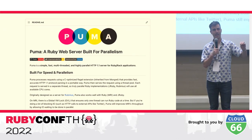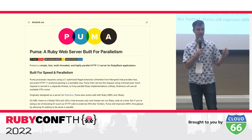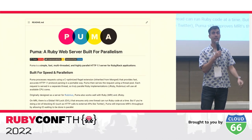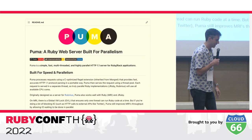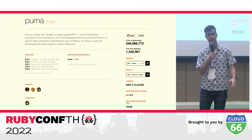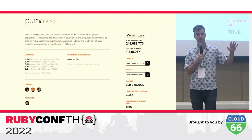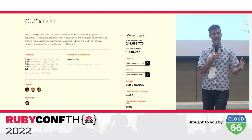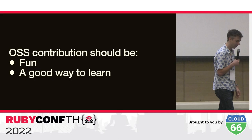Puma is a Ruby web server designed for parallelism — we used to say concurrency, now we say parallelism. That's at the top of the readme. We've been the default for Rails since about Rails 4 or 5, when they made Action Cable a thing. We're now the most downloaded Ruby web server — the most popular by number of downloads. We're up to almost 250 million downloads, so it's been a truly amazing journey.